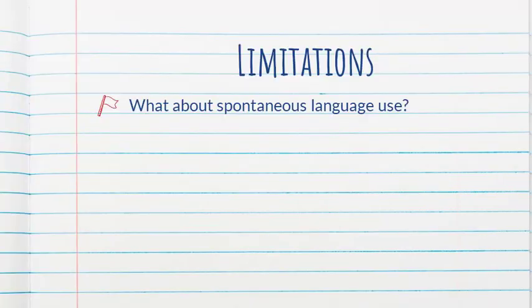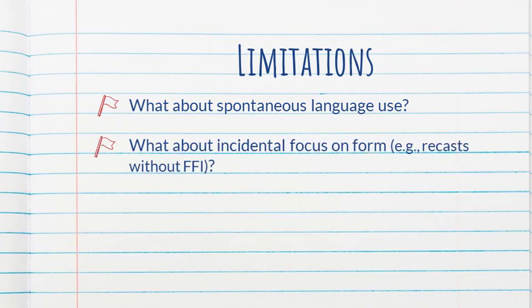In terms of limitations, I would have preferred tests that capture more spontaneous language use rather than, for example, 'choose the correct article.' What about incidental focus on form? What about a group that gets recasts but no form-focused instructional unit? The groups in this study reflect the extremes: five weeks of explicit instruction with or without feedback, versus nothing at all. But what about something in the middle — feedback without explicit instruction? We need to move away from looking at form-focused instruction as either learning rules or nothing at all, and better understand the effects of different types of incidental focus on form.